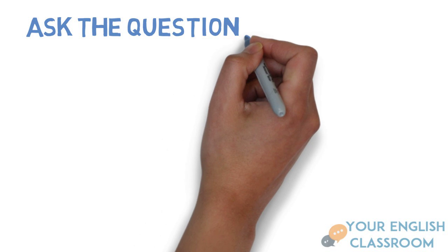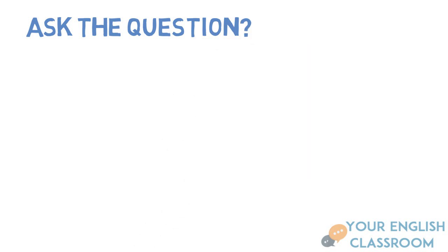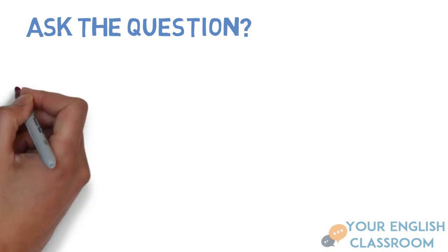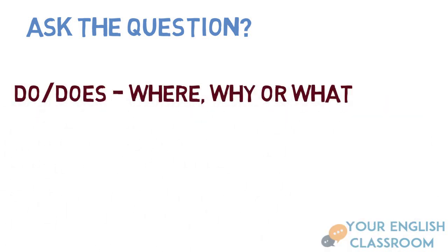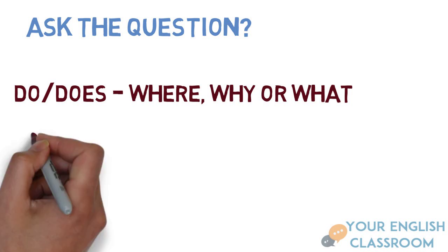So how do we ask the question in the present simple tense? Especially using do and does. Where, why or what. So, for example, if I say, where do you live? Where does she live?